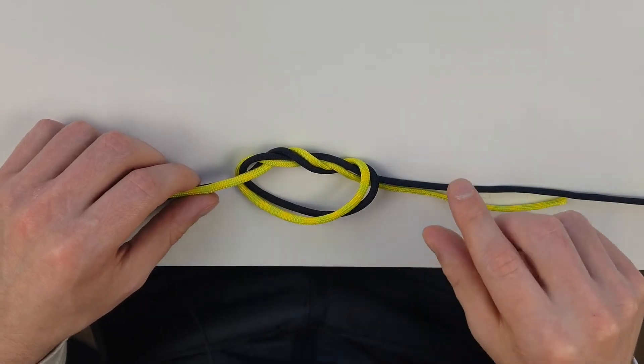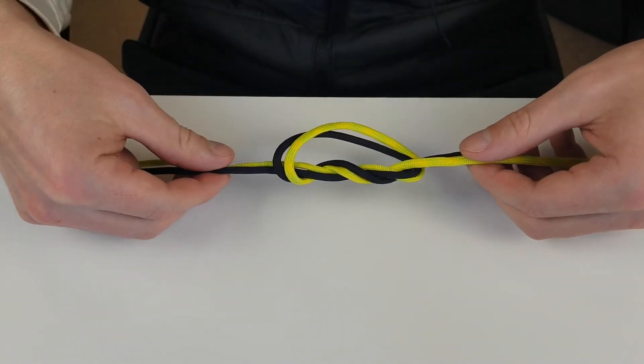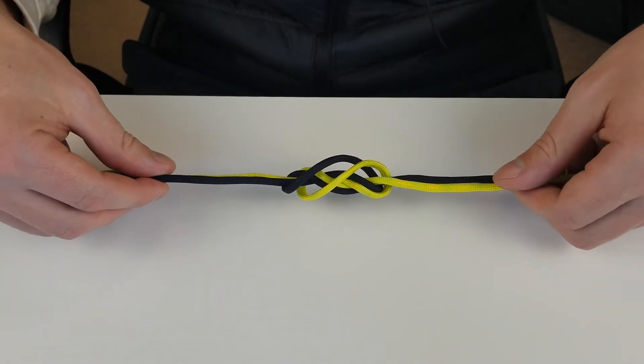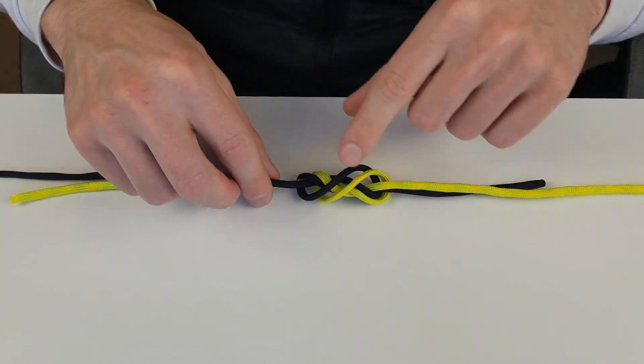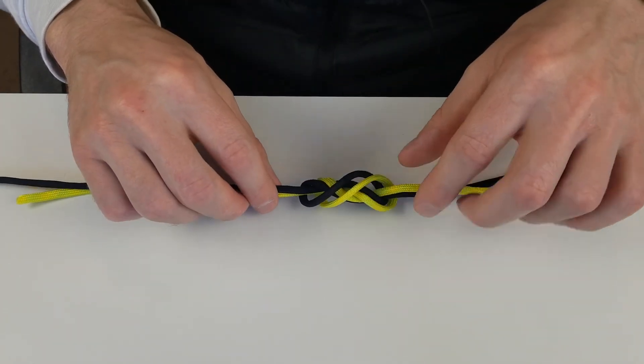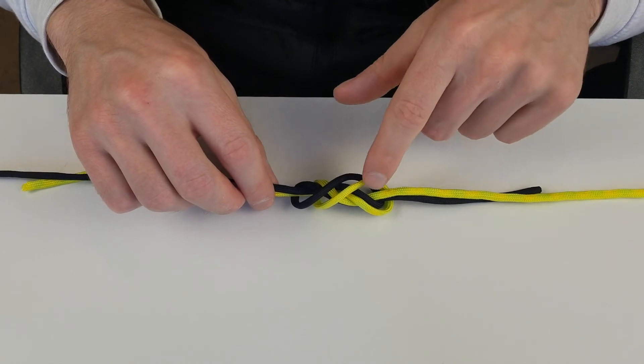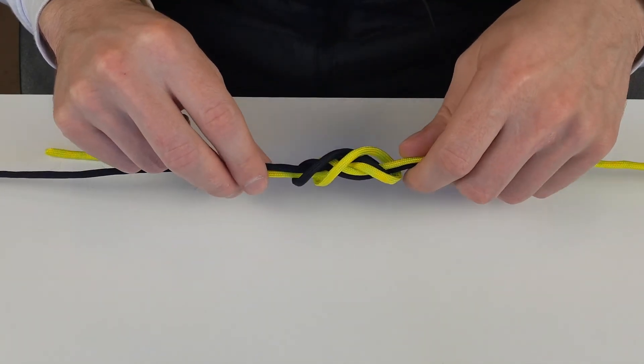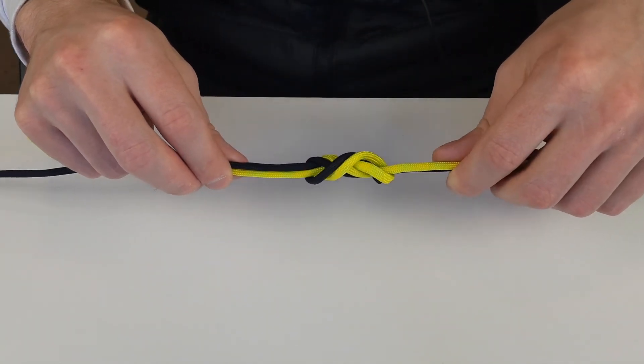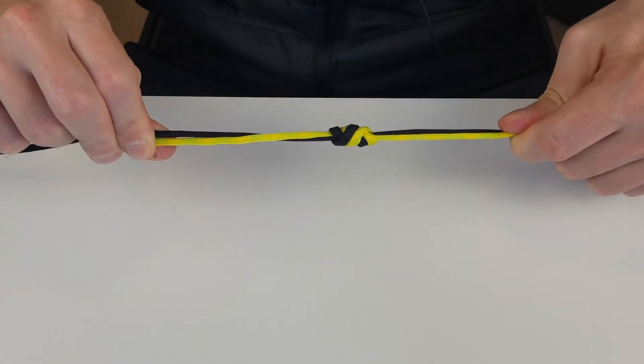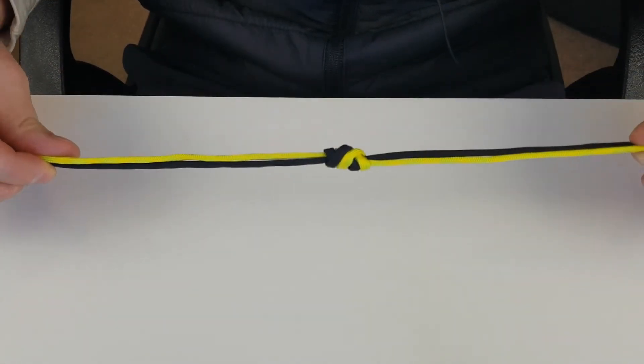All you got to do now is grab all four and slowly start pulling them together. It'll kind of form into like a figure eight. I like to moisten this with some water or spit, it'll secure it a bit better. Now slowly start pulling them, and there's the simple surgeon's knot which is one of my favorites anytime I want to connect braid to mono or even braid to fluorocarbon, just because of how simple it is and how nice and compact the knot is.